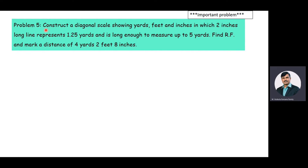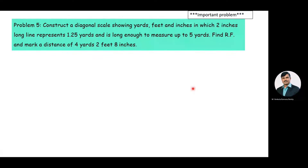The given problem is: construct a diagonal scale showing yards, feet and inches, in which a two-inches-long line represents 1.25 yards, and is long enough to measure up to 5 yards. Find the RF value and mark a distance of 4 yards 2 feet and 8 inches.